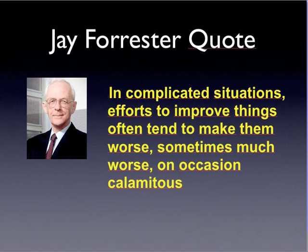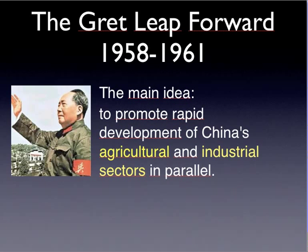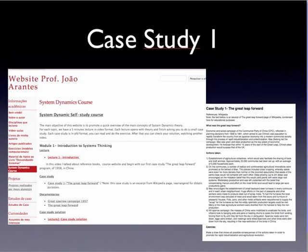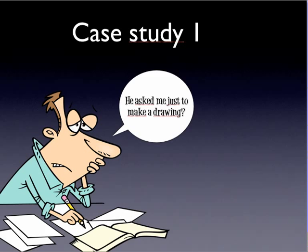Our first case study is about a very complicated problem that happened in China. Let's talk about the Great Leap Forward program. It was implemented by Mao Zedong in 1958. The main idea was to promote the rapid development of China's agricultural and industrial sectors in parallel. I invite you to go to my website and download the case study — it's a one-page case study extracted from Wikipedia about the Great Leap Forward. It won't take more than five minutes to read, and there is a super simple assignment. After reading the case, I ask you to make a drawing showing the possible consequences of Mao Zedong's actions.